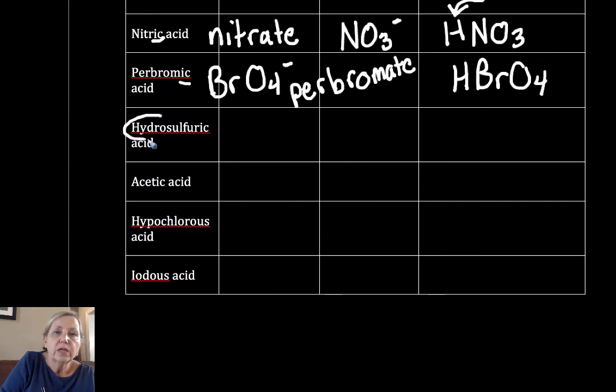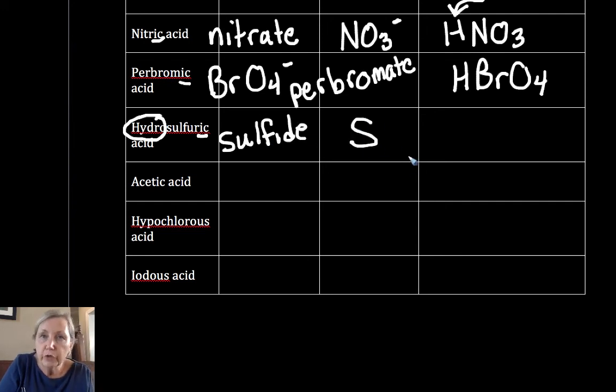Hydrosulfuric acid. Hydro. Remember, hydro, no O. So hydro-ic came from -ide: sulfide. That's simply an S. Hydro, no O. Count over to your nearest noble gas and you see it has a two negative charge, which requires two positives to balance it. H2S.